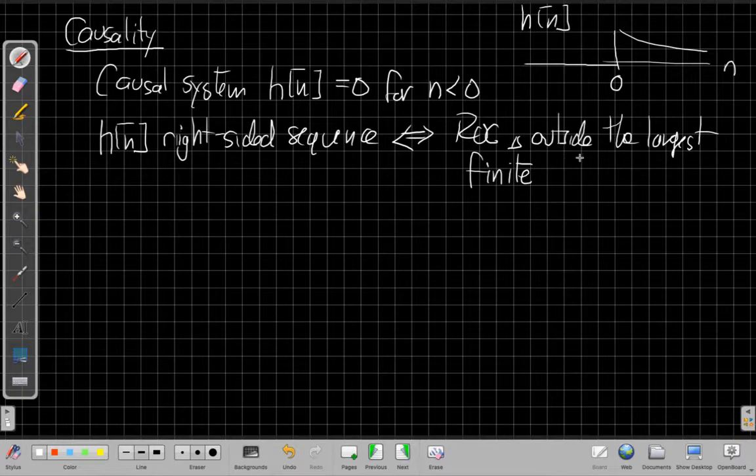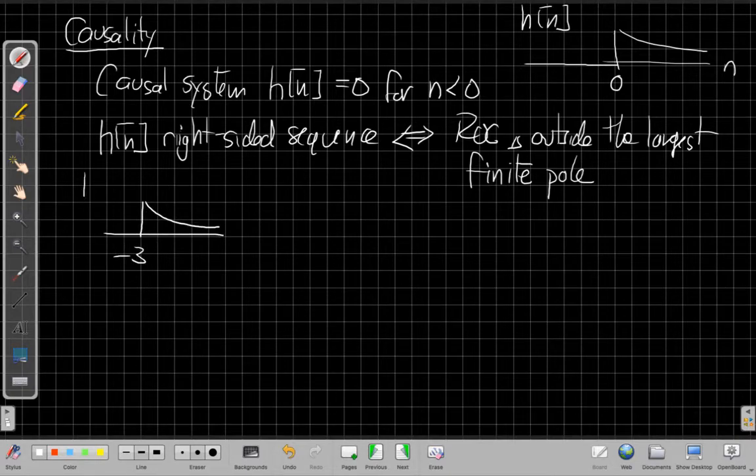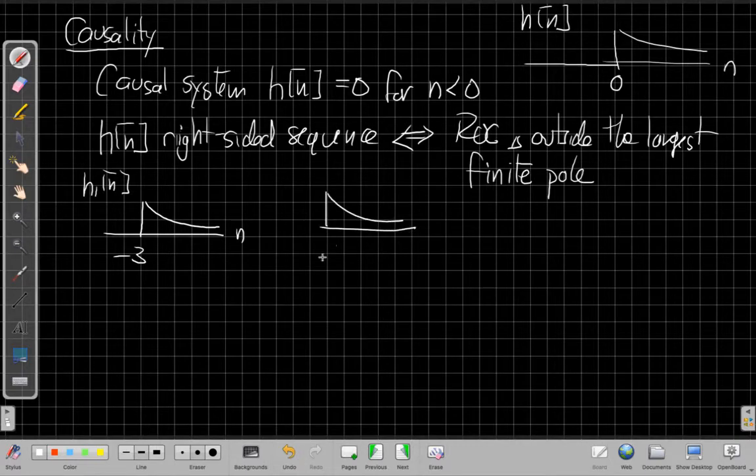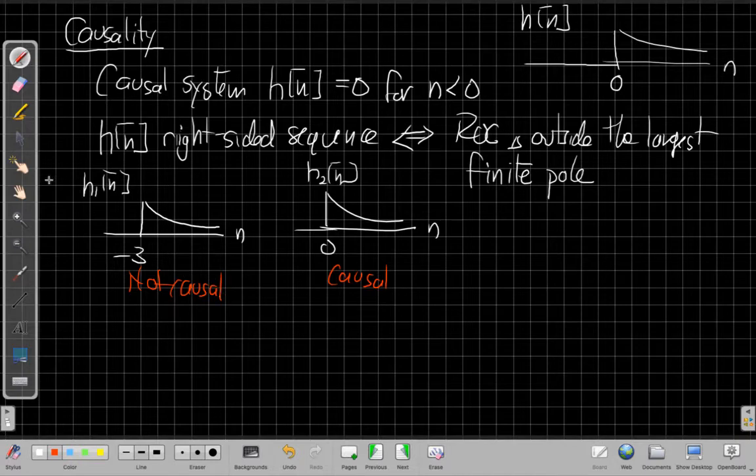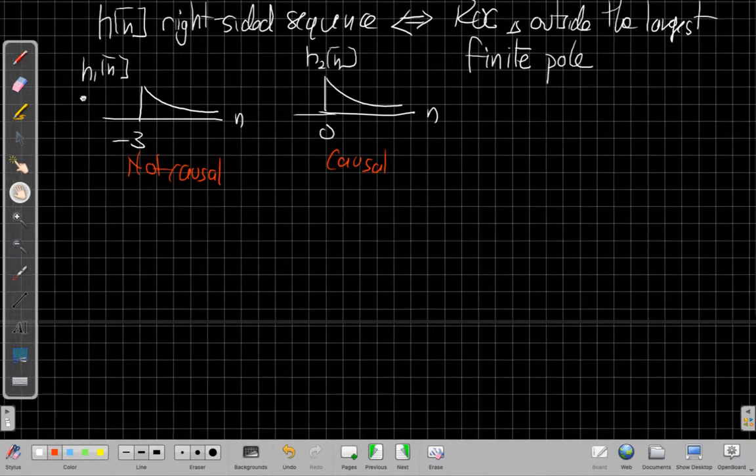So that's part way there, but just saying ROC is outside the largest finite pole doesn't necessarily help us tell the difference between, so we could have a right-sided sequence like this, that's right-sided but not causal because it's starting in negative time. Or one that looks like this, that starts at zero and moves forward. So if we look at these, we would say this one is causal and this one is not causal. So there's one last piece of the puzzle to figure out when we look at an ROC if the system is causal or not.